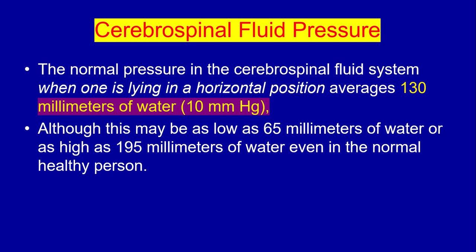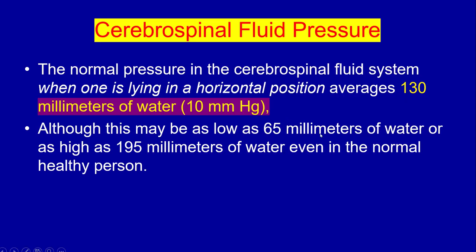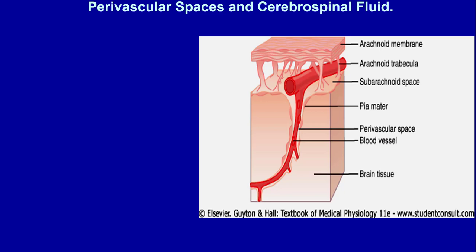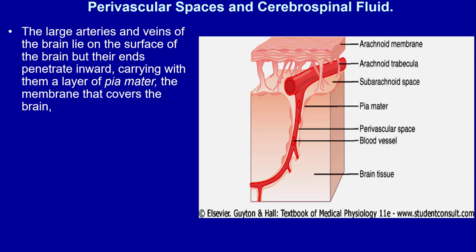Cerebrospinal fluid pressure: the normal pressure in the CSF system when one is lying in a horizontal position averages 130 mm of water, or 10 mm of mercury, although this may be as low as 65 mm of water or as high as 195 mm of water even in normal healthy persons.